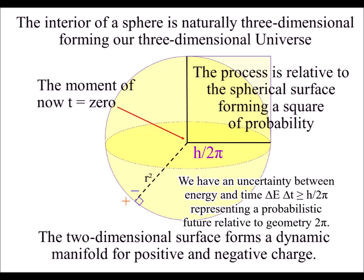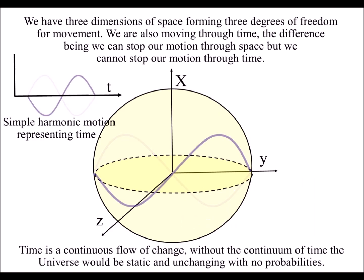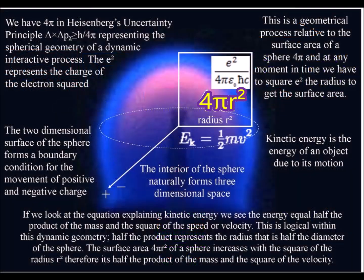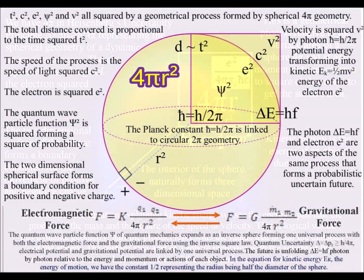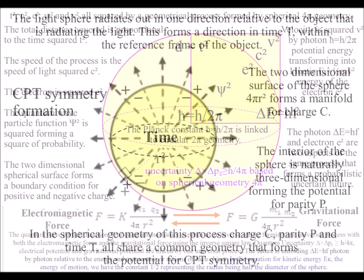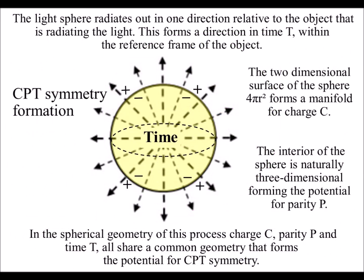The interior of a sphere is naturally three-dimensional, giving us our three dimensions of everyday life, with one variable in the form of time. The spontaneous exchange of photon energy is continuously forming the movement of charge, with potential energy transforming into the kinetic energy of matter, in the form of electrons, as a probabilistic, uncertain future comes into existence.